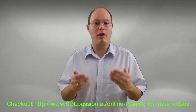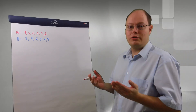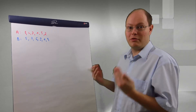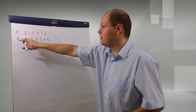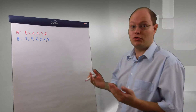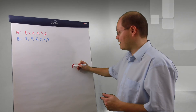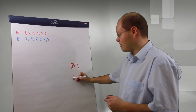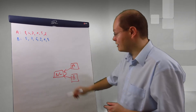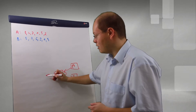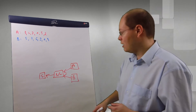Let's switch over to the flip chart where I will describe the nested loop operator in more detail. I want to show how a nested loop operation is performed in SQL Server. As you can see, we have two tables — table A and table B. We have some ID values and we want to join both tables together. Looking at the execution plan, SQL Server is accessing table A and table B, joining both tables together with a nested loop operator.